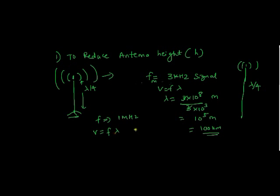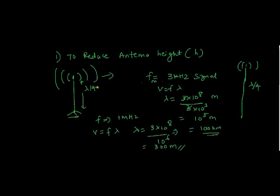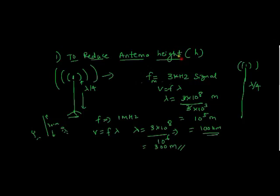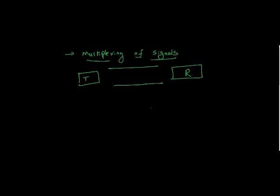Let's calculate what is the height of antenna when frequency is around 1 MHz. Using v = f λ, λ equals 3 × 10⁸ divided by 10⁶, which is around 300 meters. So now the antenna height required is just 300 meters to transmit from one point to another. So if someone asks you why modulation, you can say: to reduce antenna height.